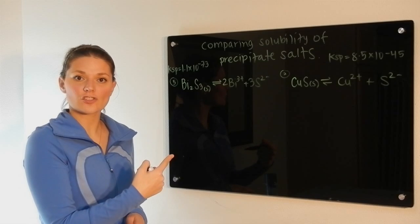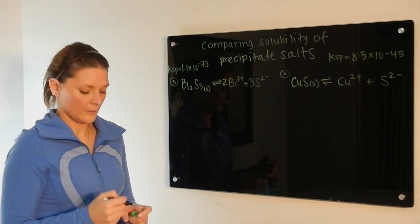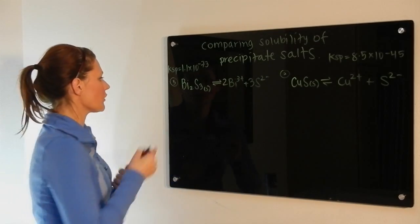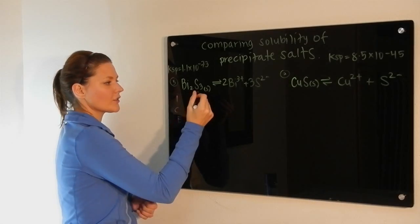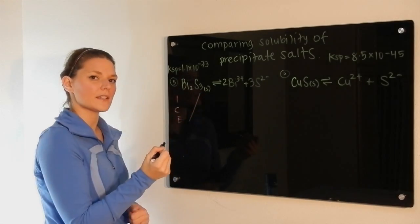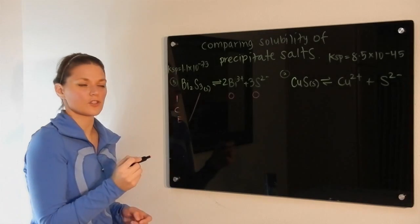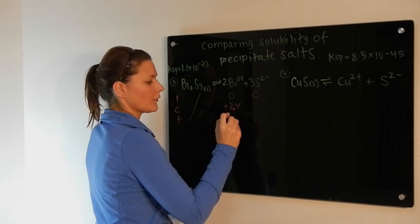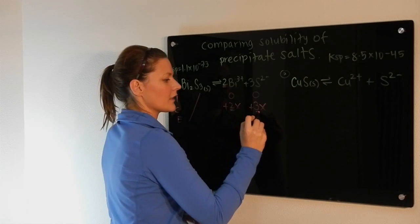Remember, in an ICE chart for these kinds of compounds, X represents the solubility. So if we do an ICE chart for this one, we're never concerned with the solid—it doesn't affect equilibrium. And we are not starting out with any of those in solution. We will form 2X of these, remember the two and the two are linked, and we will form 3X of these.